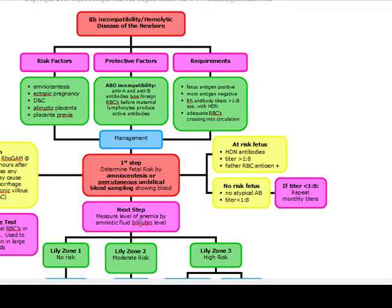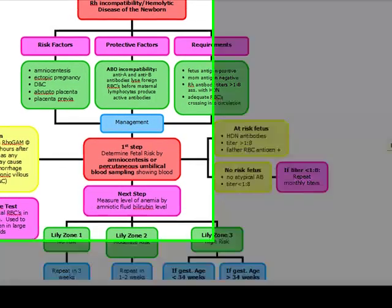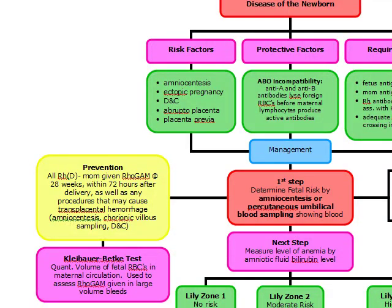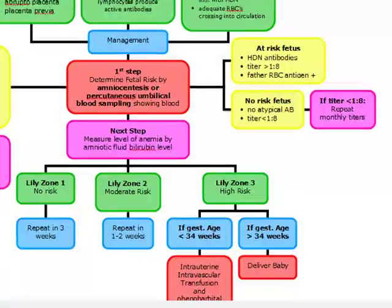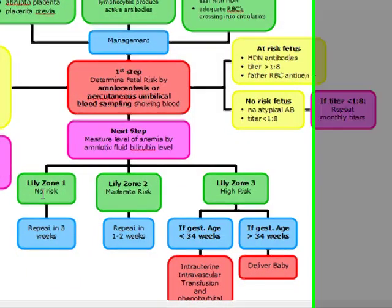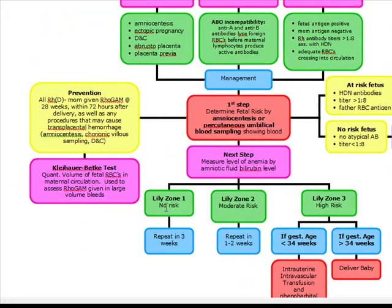Once we've determined whether fetal risk is present, we assess the degree of anemia by measuring the amniotic fluid bilirubin level. Amniotic fluid bilirubin indirectly indicates fetal hemolysis because bilirubin accumulates as a byproduct of RBC lysis. This bilirubin level is then plotted on the Liley graph. If the patient is in Liley zone one, there is no risk, and we repeat the test in three weeks.